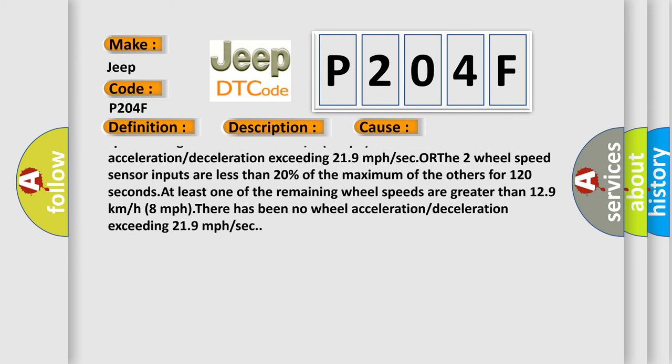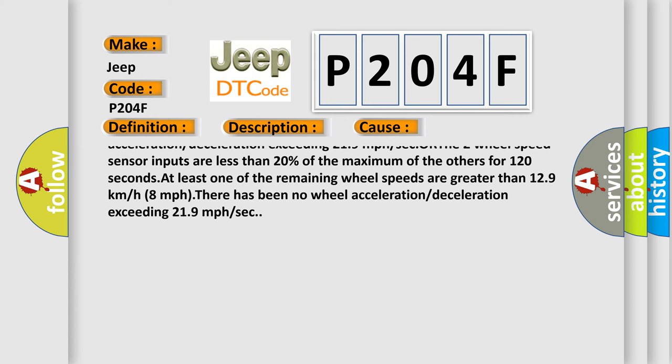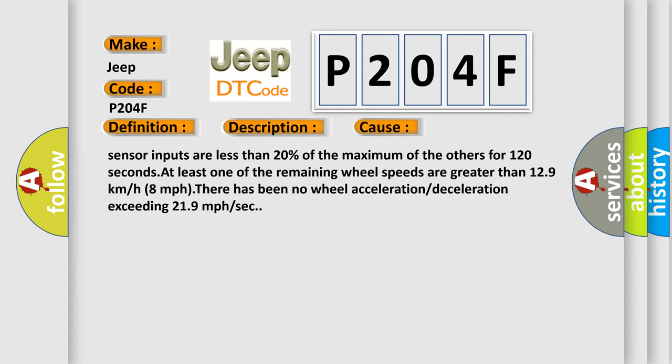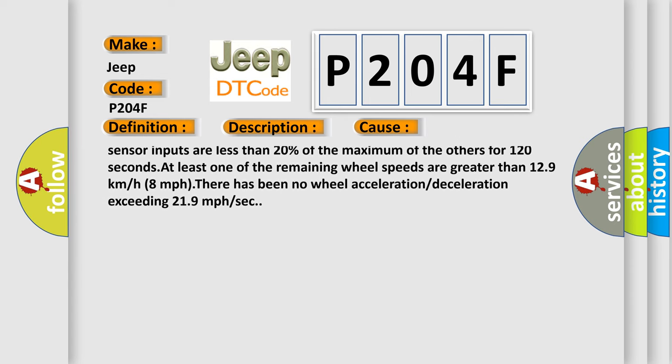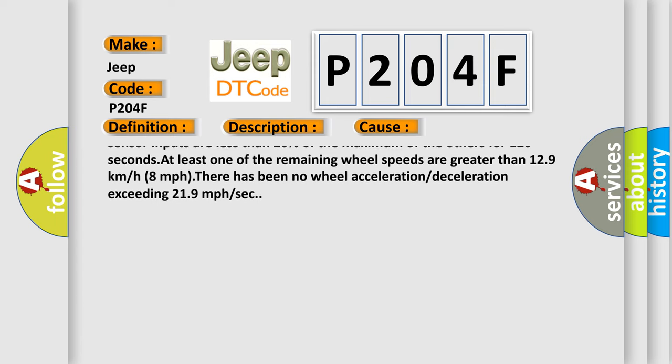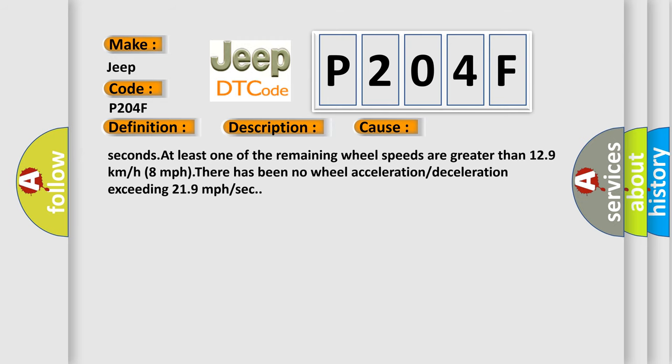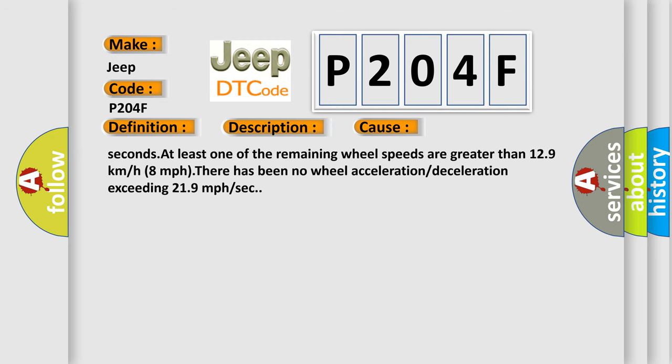There has been no wheel speed sensor inputs less than 20% of the maximum of the others for 120 seconds. At least one of the remaining wheel speeds are greater than 12.9 kilometers per hour (8 mph). There has been no wheel acceleration or deceleration exceeding 21.9 miles per hour per second.